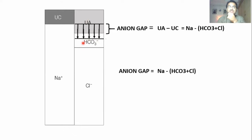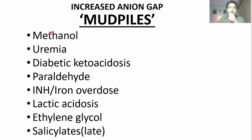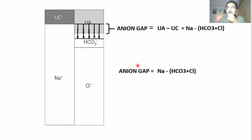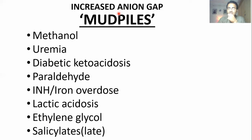That increase in anion gap is caused by certain conditions. We remember these with the mnemonic MUD PILES: Methanol, Uremia, Diabetic ketoacidosis, Paraldehyde, Isoniazid, Iron overdose, Lactic acidosis, Ethylene glycol, Salicylates — in their late stages. Note: salicylates in early stages cause metabolic alkalosis; in late stages they cause metabolic acidosis. So whenever there is an increase in anion gap, always look for a cause in MUD PILES.